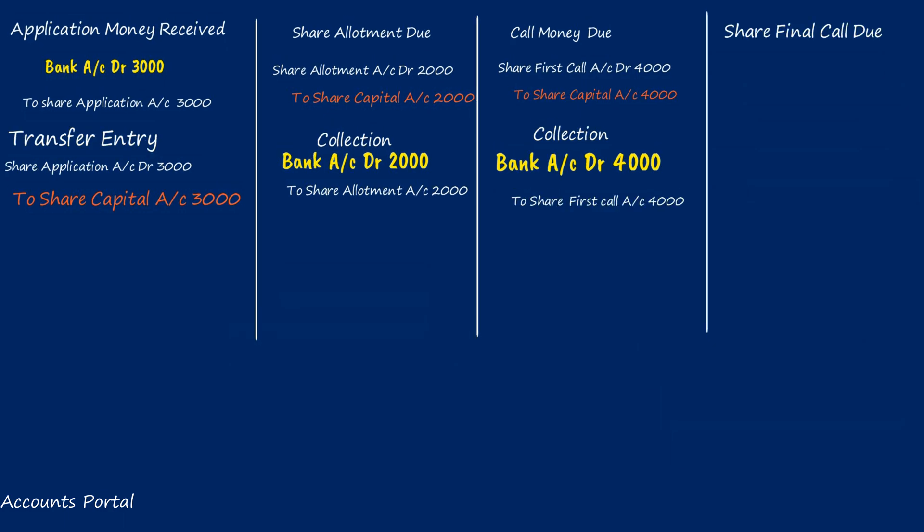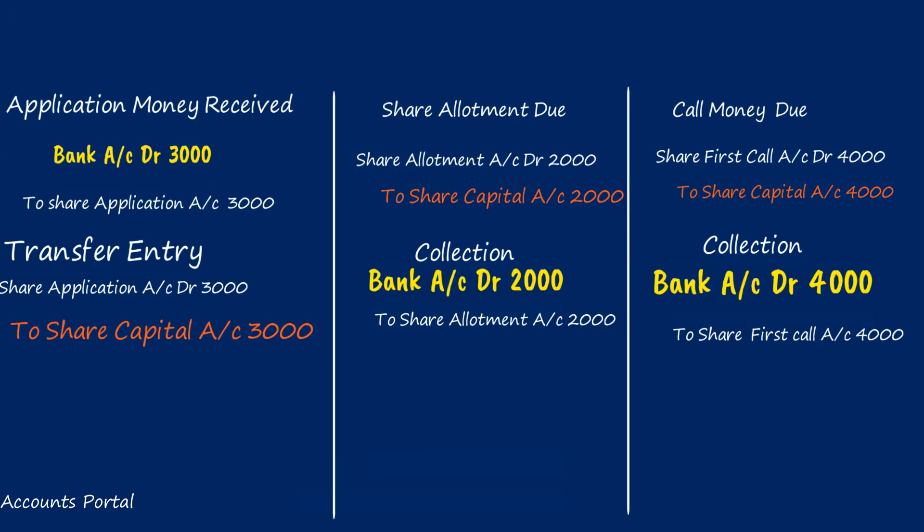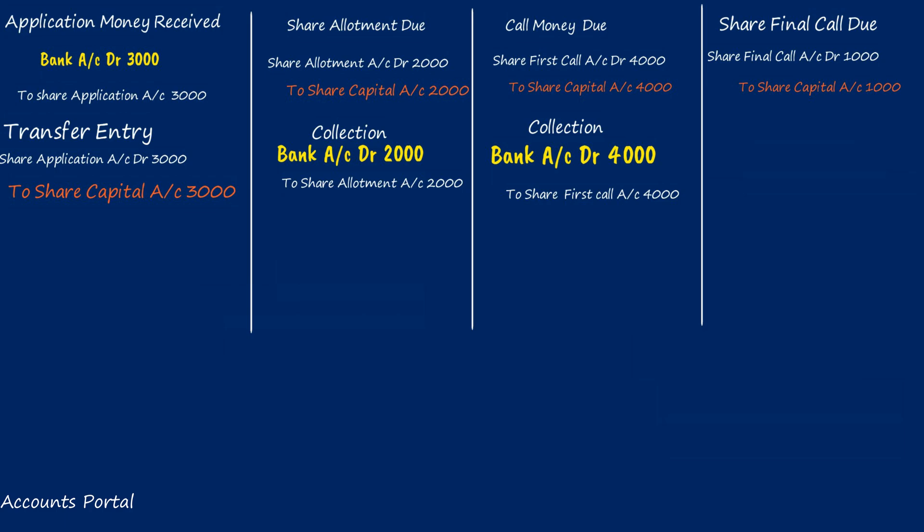Share Final Call due entry: Share Final Call account Dr. — number of shares allotted × final call money per share = 1,000 × 1 = rupees 1,000. Share Final Call account Dr. 1,000 to Share Capital account 1,000. When we say Brahmi fails to pay, it means the company already made a call, but Brahmi did not pay the final call money of rupees 1,000.